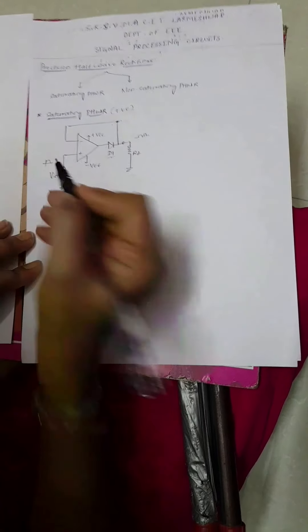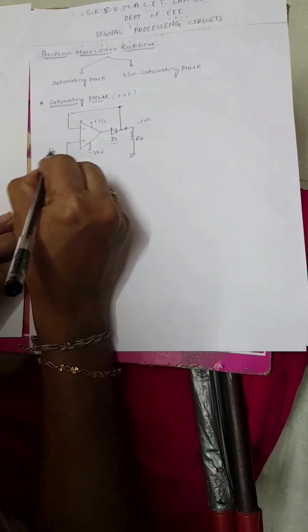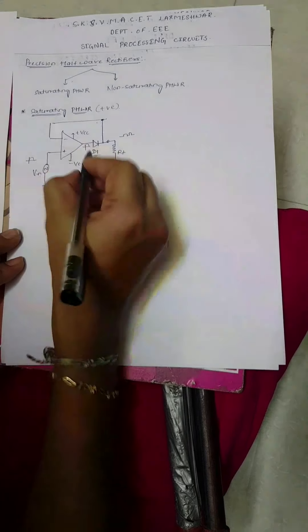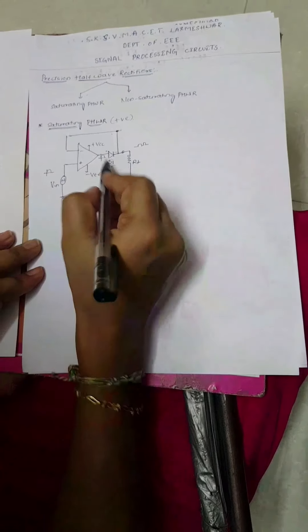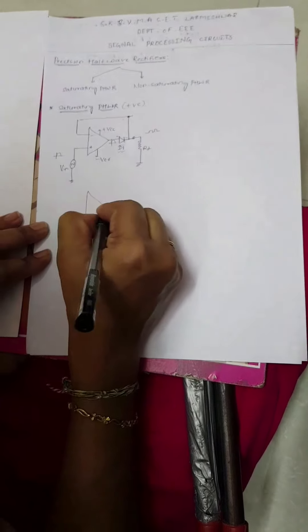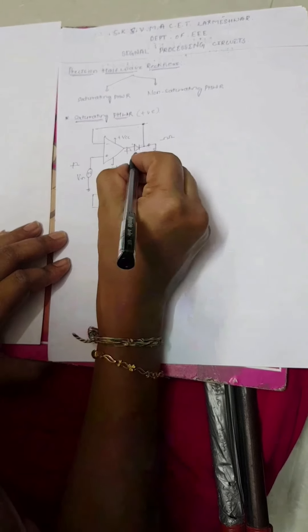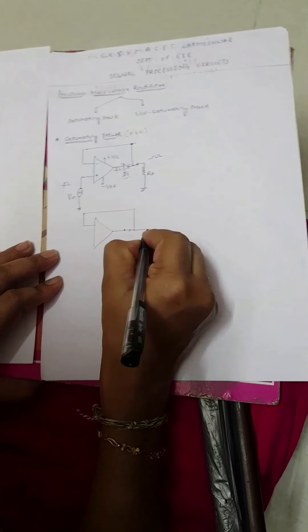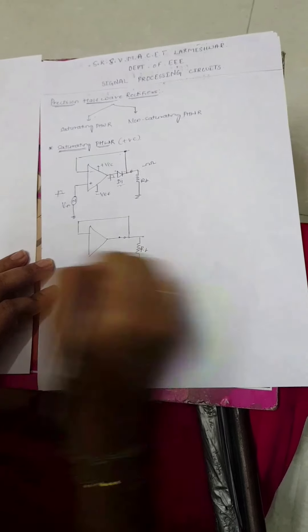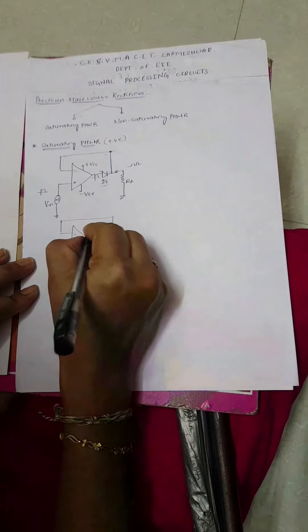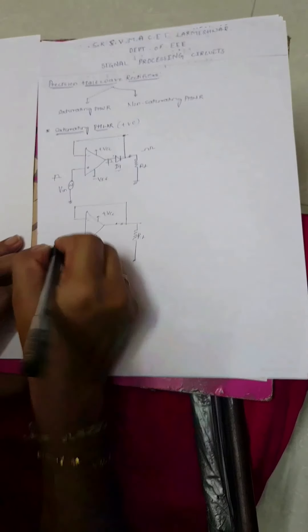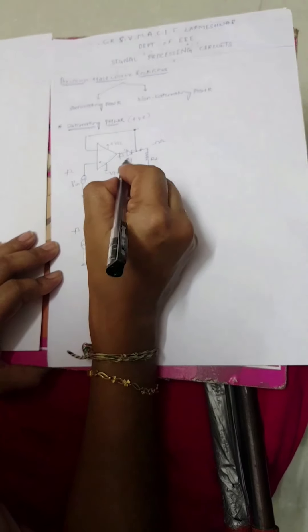For the positive half cycle, the input is applied to the non-inverting terminal. Whenever there is a positive half cycle at the input, the output will also be positive. Observing the diode terminal: when output is positive, the anode is positive and cathode is negative, so diode D1 becomes forward biased. We can redraw the circuit — D1 acts as a short circuit, with RL connected at the output, and the op-amp supplied with +VCC and −VCC.